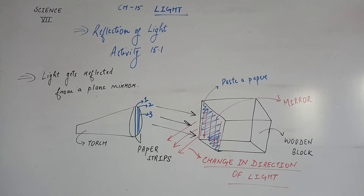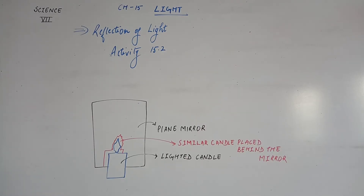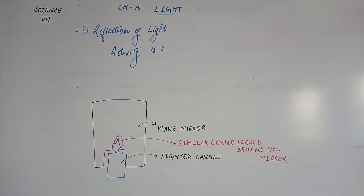Next, Activity 15.2, where we can see how images form in the mirror. Place a lighted candle in front of a plane mirror. Try to see the flame of the candle in the mirror — it appears as if a similar candle is placed behind the mirror. The candle which appears behind the mirror is the image of the candle formed by the mirror. The candle itself is the object.